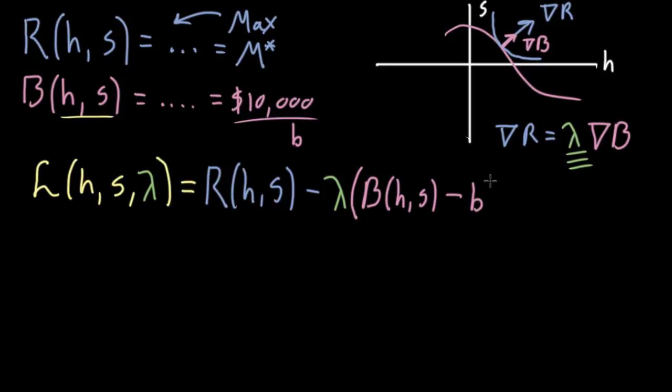But it's whatever your actual budget is. So we think of that, and I'm just going to emphasize here that that's a constant. This b is being treated as a constant right now. We're thinking of h and s and lambda all as these variables. And this gives us some multivariable function.